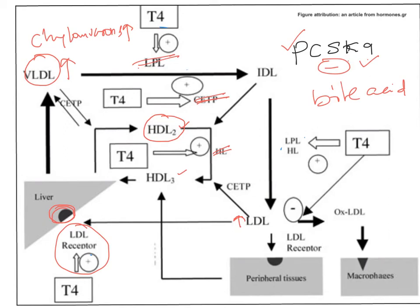When PCSK9 is expressed, it binds to the LDL receptor and prevents LDL internalization, so LDL remains elevated in the circulation. Furthermore, T3/T4 normally prevents LDL oxidation, but in hypothyroidism — with elevated LDL levels and loss of that protection — there is increased oxidation of LDLs.